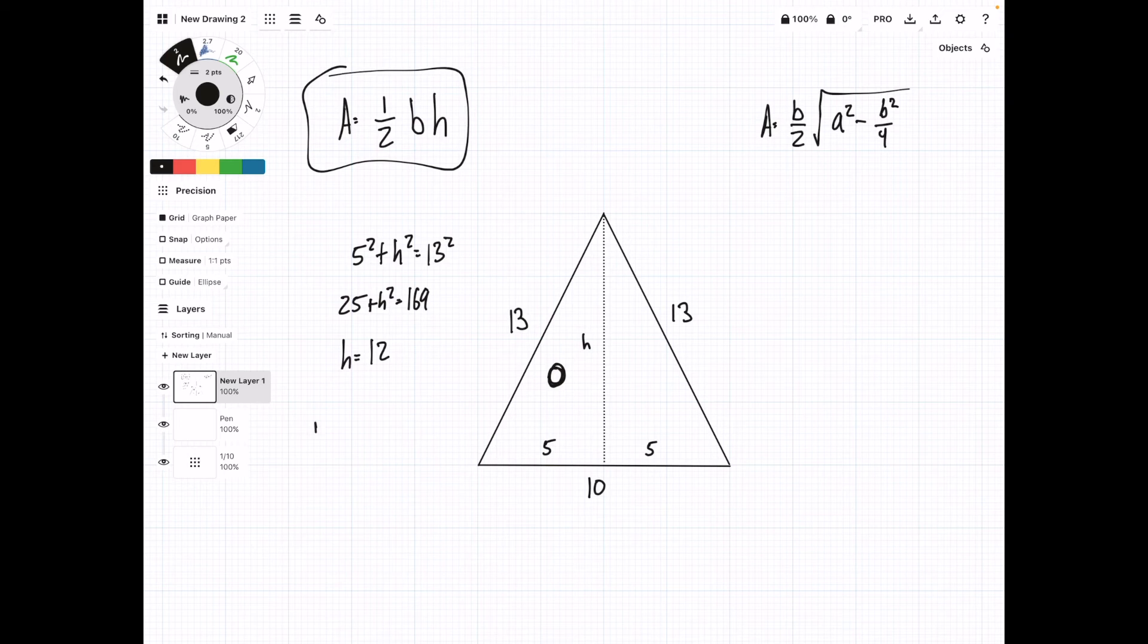Then we can go back up to the top and do 1 half times 10 times 12. So we're gonna get 1 half of 120 equals 60. So super easy, you know.